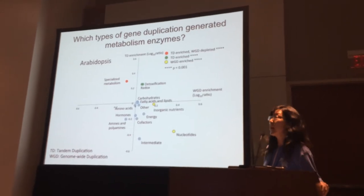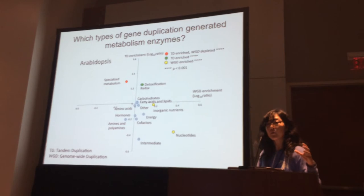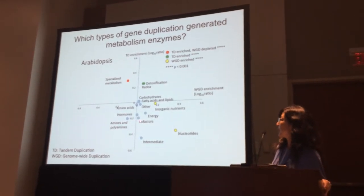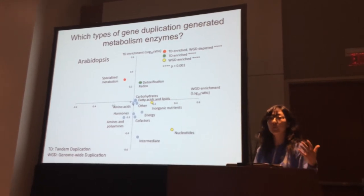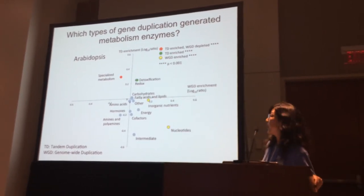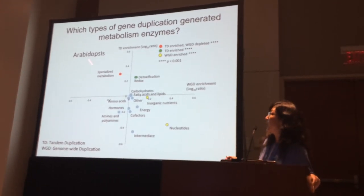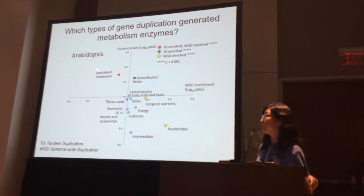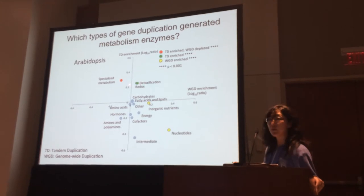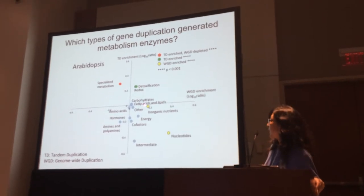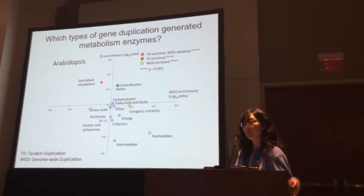We first looked at Arabidopsis, examining metabolic genes for tendencies to duplicate by tandem duplication (y-axis) or whole genome duplication (x-axis), as fold enrichment compared to all metabolic genes, grouped into metabolic domains. We found that specialized metabolism is significantly enriched in tandemly duplicated genes, as were detoxification and redox genes. In contrast, inorganic nutrients and nucleotides were significantly enriched in whole genome duplicated genes.